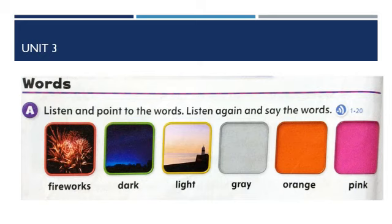It is daytime and you can see all the things in the light. Light. The next three pictures are related to color words. First is gray. Gray. Orange. Orange. And pink. Pink. Now point to the words and say the words again: fireworks, dark, light, gray, orange, pink.